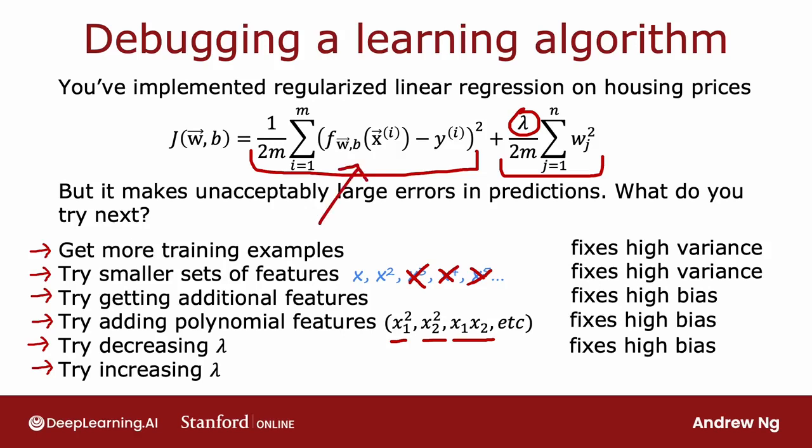just putting too much attention to fitting the training set, but at the expense of generalizing to new examples. And so increasing lambda would force the algorithm to fit a smoother function, maybe a less wiggly function, and use this to fix a high variance problem.